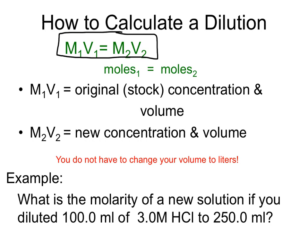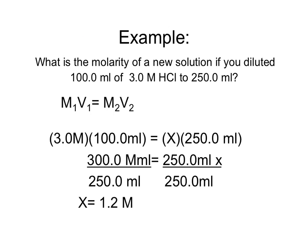What is the molarity of a new solution if you diluted 100 milliliters of 3 molar HCl to 250 milliliters? The volume and molarity of the original stock concentration are given — that's your M1 and V1. The new volume of 250 milliliters is your V2. Substituting into the equation: 3 times 100 equals 300, and that equals X times 250 milliliters. Dividing both sides by 250 milliliters to get X by itself, we end up getting 1.2 molar.